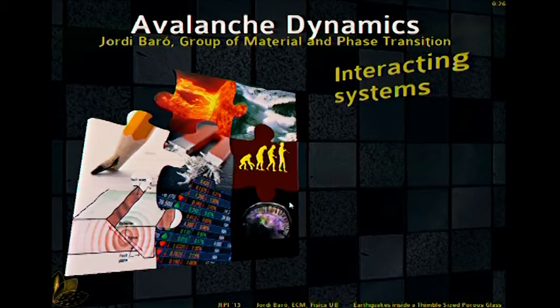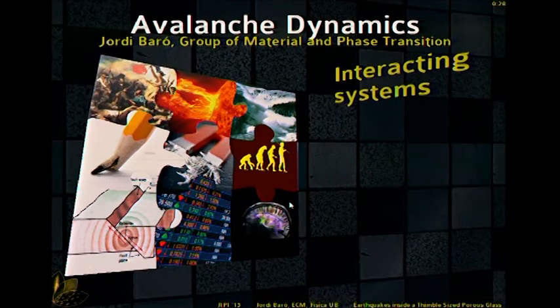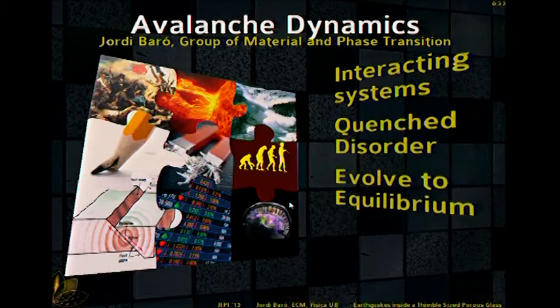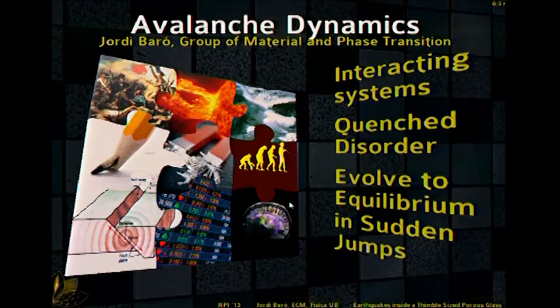In condensed matter, when we have interacting systems that are governed by some kind of quench or static disorder, the system tends to evolve in a spiky way and in sudden jumps that we call avalanches.